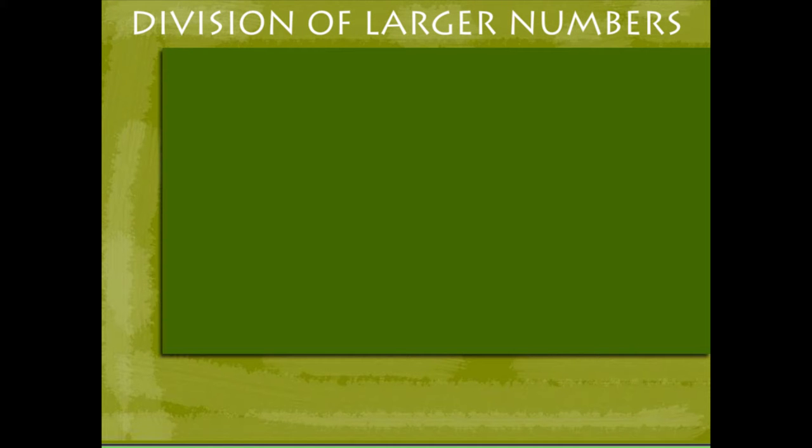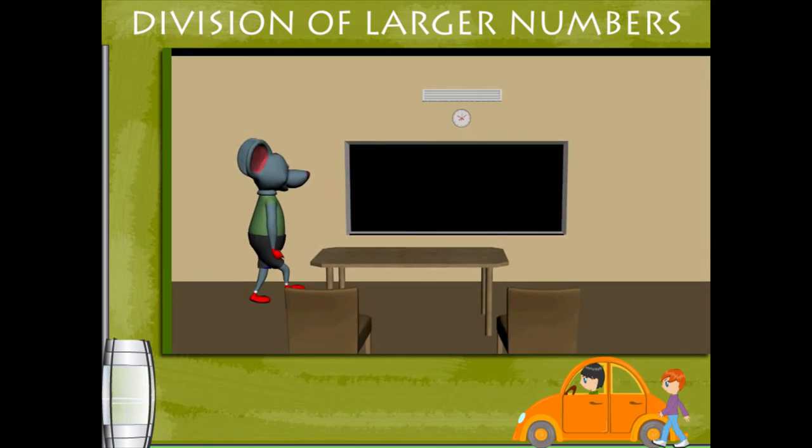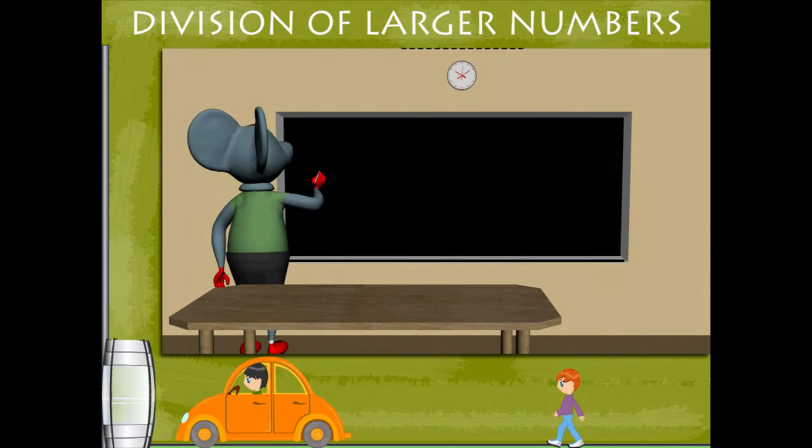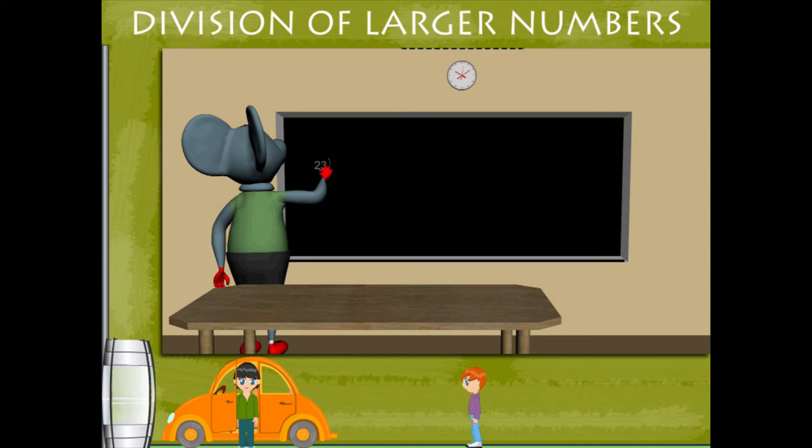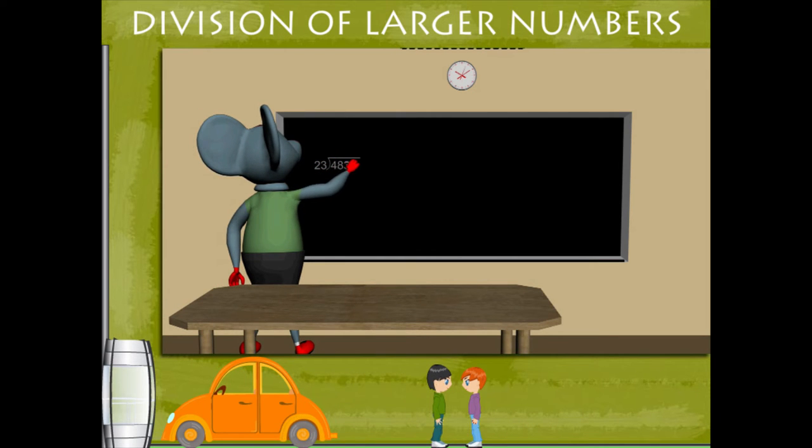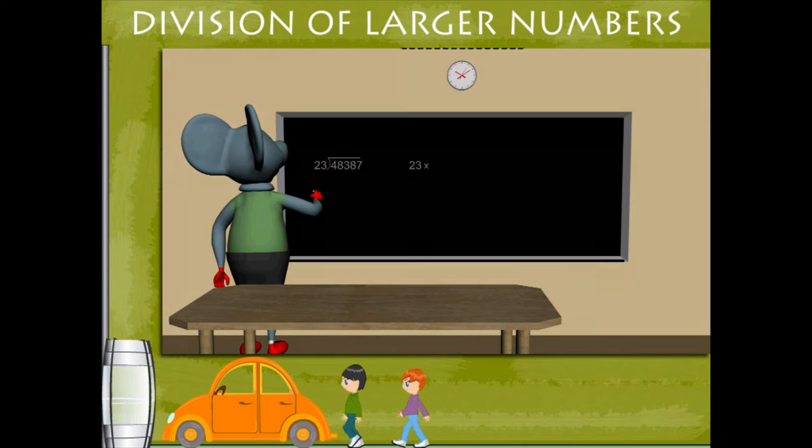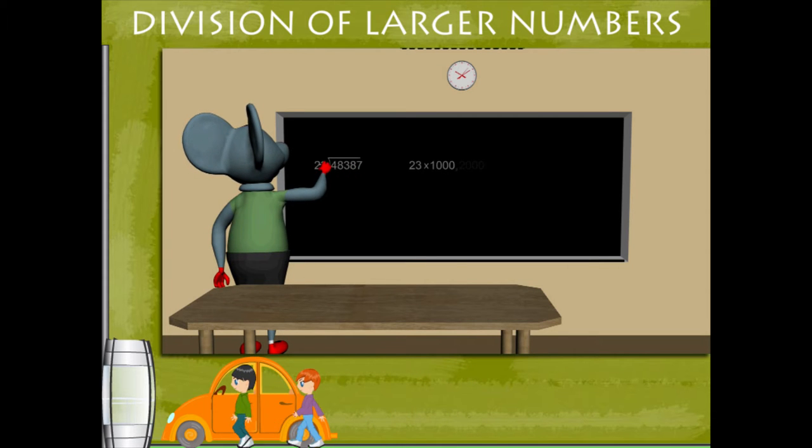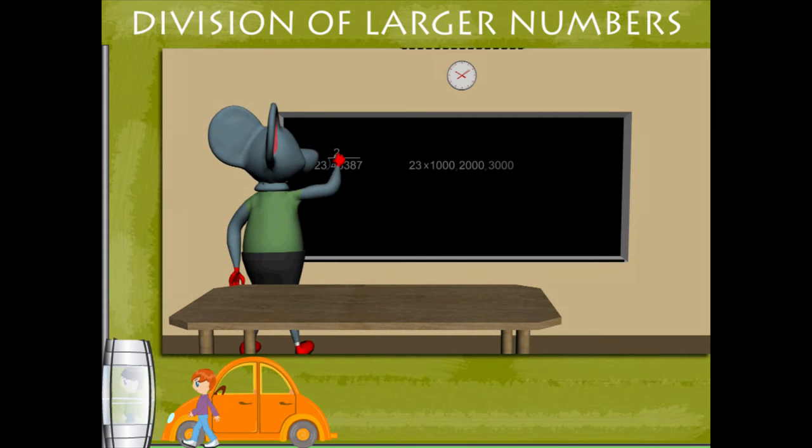Division of Larger Numbers. Toby Mouse is in class to divide 48,387 by 23. He writes this on the board and calculates the products of 23 and 1000, 23 and 2000, 23 and 3000.